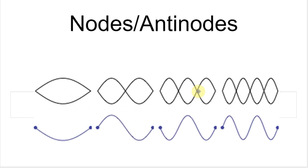And antinodes, they're going to be points that are crests and troughs. So like here's an antinode, here's an antinode, and so on and so forth.